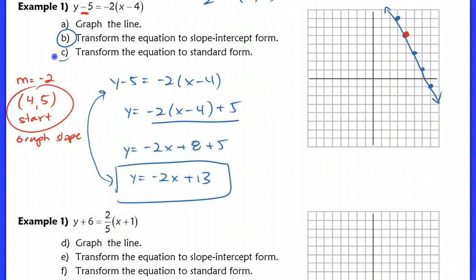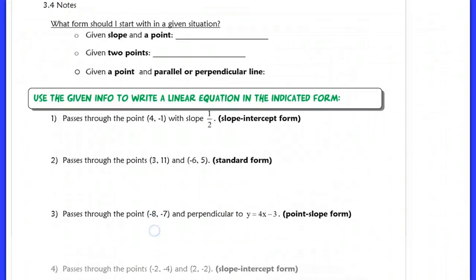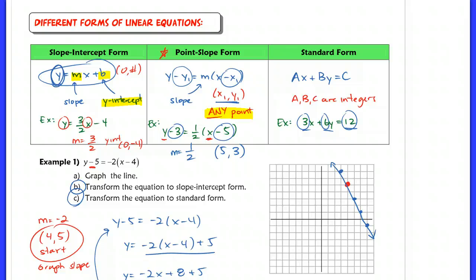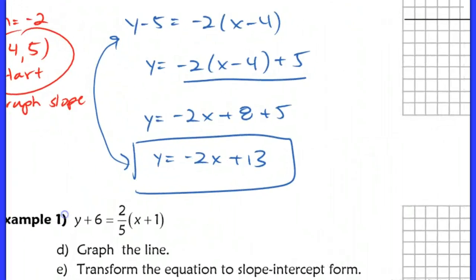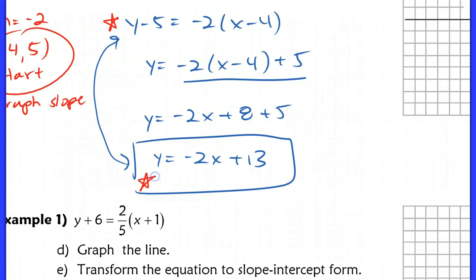Now the last part says transform the equation to standard form. So the only difference between slope-intercept form and standard form is that you have, if you go back up here again, you have your x and y on the same side here, as opposed to over here where we have y by itself. So instead of starting back over with this equation here, I'm just going to start with this, because I already know what the, now see how we have all integers here? So now I'm just going to add the 2x to the other side. And now I have the same line, again, this is written in a third way, but this is now in standard form.